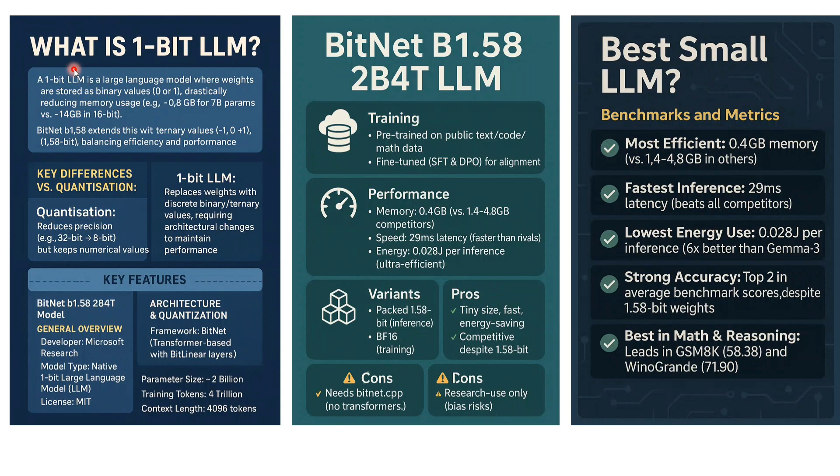Is it the best small LLM? Maybe yes. It is the most efficient in terms of memory, has the fastest inference, the lowest energy use, and strong accuracy — top two in average benchmark scores, despite using just 1.58-bit weights. It is best in math and reasoning, and leads in JSM 8K as well as Winogrande.